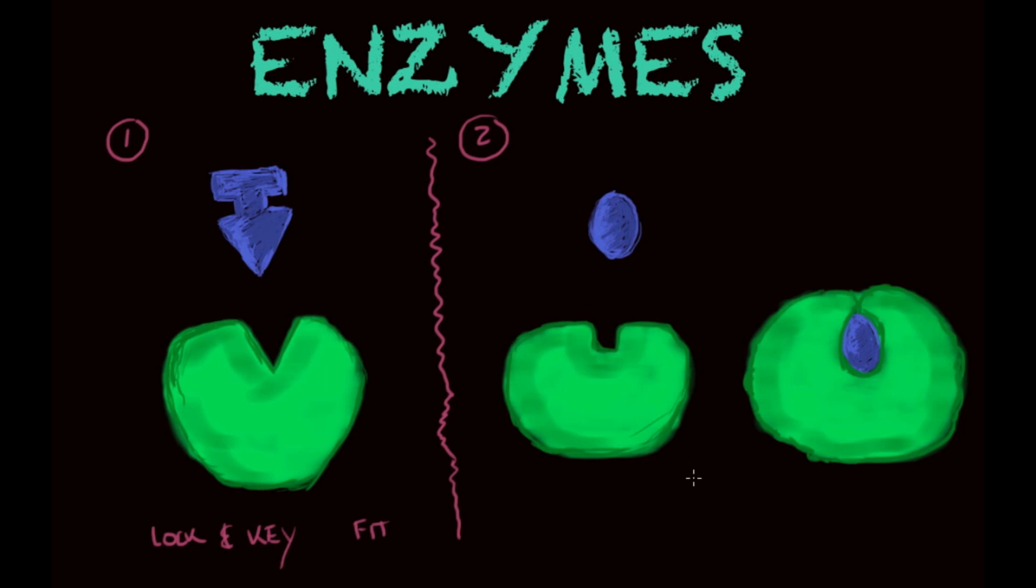The other type of fit models that we know, or other types of fits, is the induced fit. And the induced fit, as you can see here, the substrate is very different, or the shape of the substrate is very different from the shape of the active site on the enzyme. But this enzyme is specific to this substrate. So it will find a way, it will be induced by the substrate to fit the substrate into its active site, and allow the reaction to happen, as you can see here. So there is an induced fit.